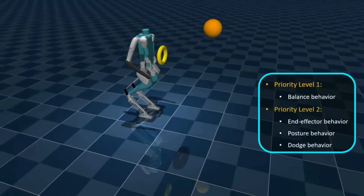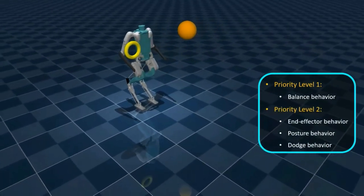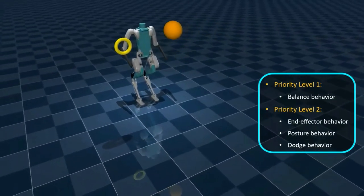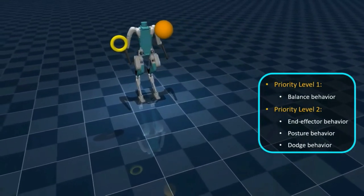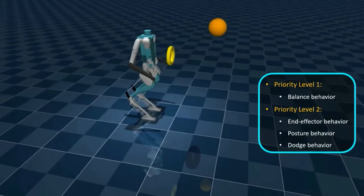The other behaviours, which are the end-effector behaviour, posture behaviour and dodge behaviour, ensure that the robot places its right arm in the yellow hoop, maintains an upright posture and dodges the incoming basketball respectively.